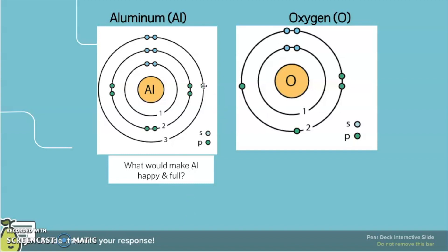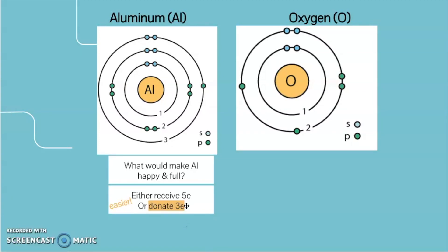We're going to ask ourselves what would make aluminum happy and full. There are kind of two options here. Because it has three valence electrons and it wants to be happy and full at eight valence electrons, it could either receive five electrons — so we would have one through eight — or aluminum could get rid of these three valence electrons, drop down an energy level and be happy and full in energy level two. We're going to go with the easier option. It would take less work to just donate three than it would to receive five.